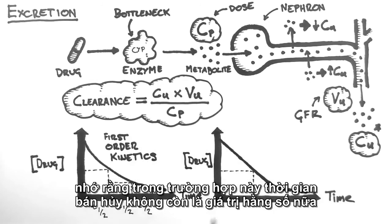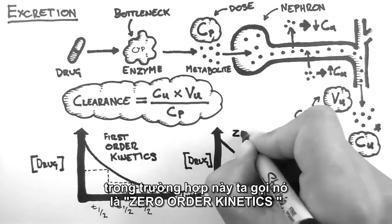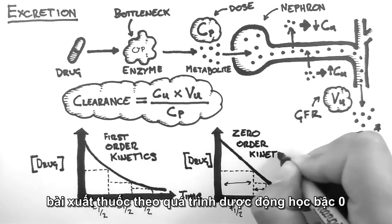Hence, we end up with a linear graph like this. Note that in this case, the half-life is not a constant value anymore. It is dependent on the current concentration of the drug. When a drug behaves like this, we call it zero-order kinetics.